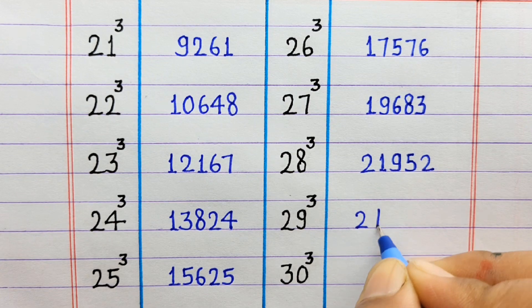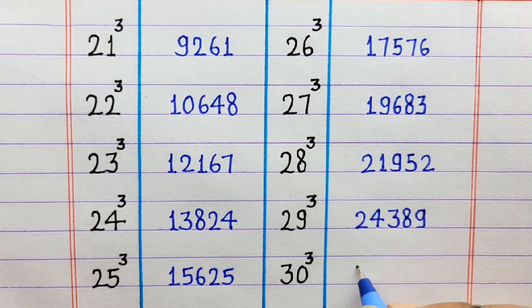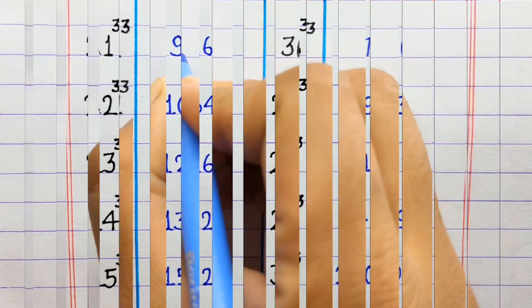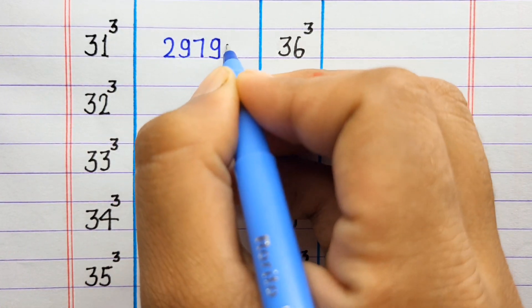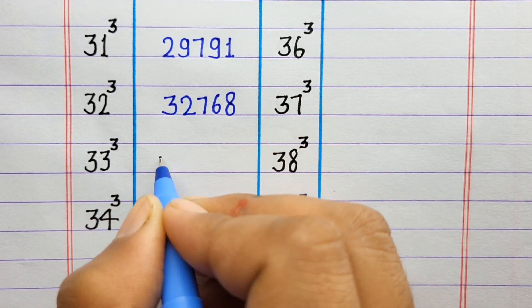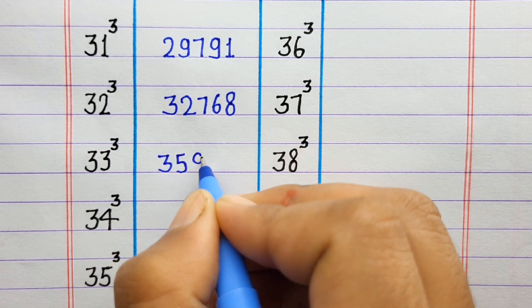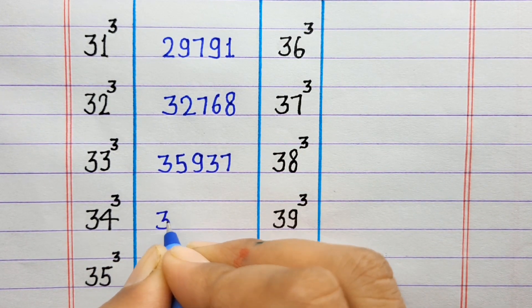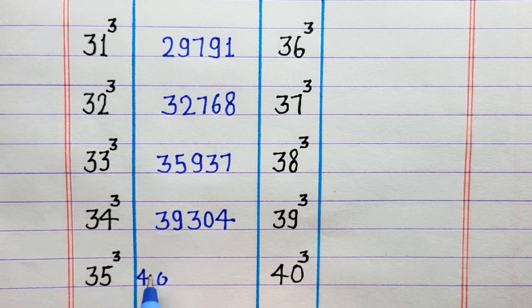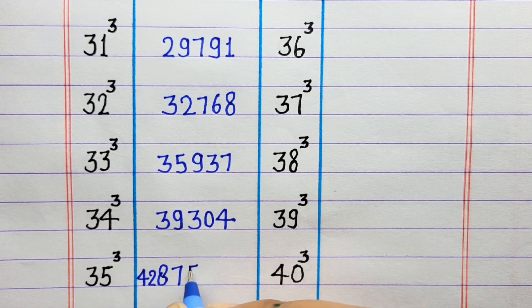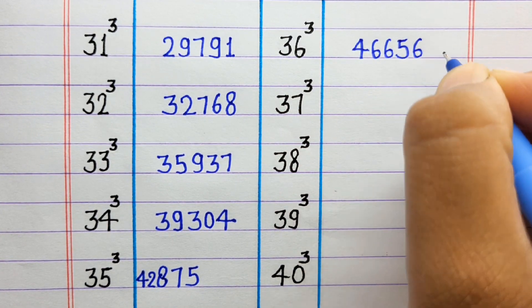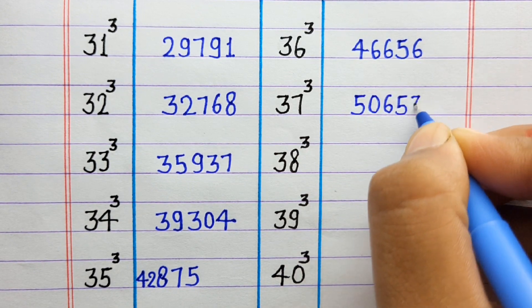29 ka cube 24,389. 30 ka cube 27,000. 33 ka cube 35,937. 34 ka cube 39,304. 35 ka cube 42,875. 36 ka cube 46,656. 37 ka cube 50,653.